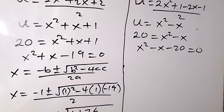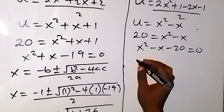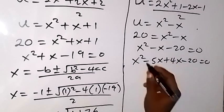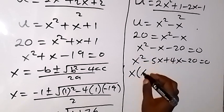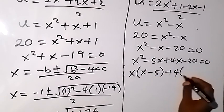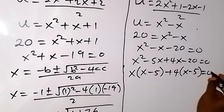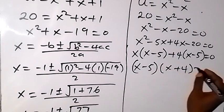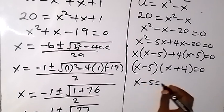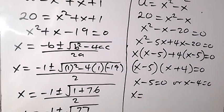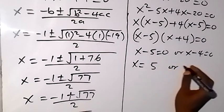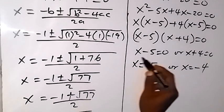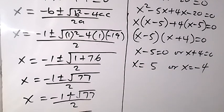We form the quadratic: x squared minus x minus 20 equals 0. Factorizing: (x minus 5)(x plus 4) equals 0. So either x minus 5 equals 0, giving x equals 5, or x plus 4 equals 0, giving x equals negative 4.